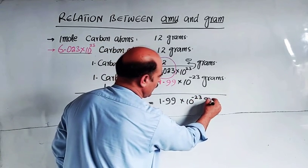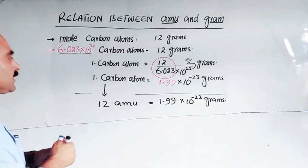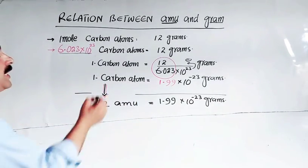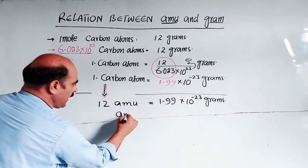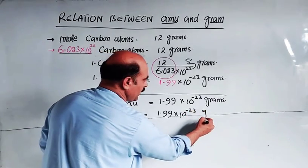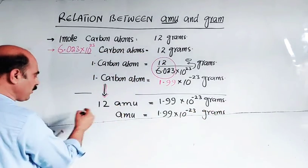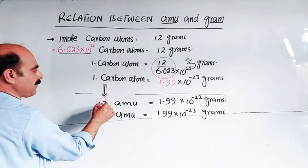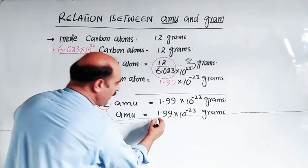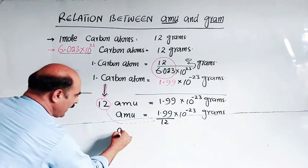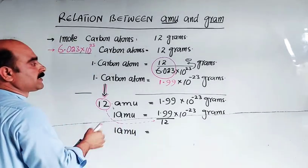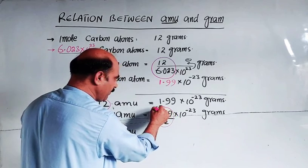To find 1 amu, we divide both sides by 12. So 1 amu will be 1.99 divided by 12, which equals 0.167 × 10^-23 grams.